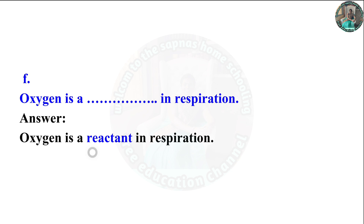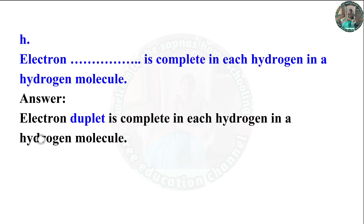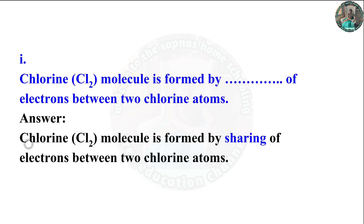Oxygen is a reactant in respiration. Sodium chloride is an ionic compound while hydrogen chloride is a covalent compound. Electron duplet is complete in each hydrogen molecule. Chlorine molecule is formed by sharing of electrons between two chlorine atoms.